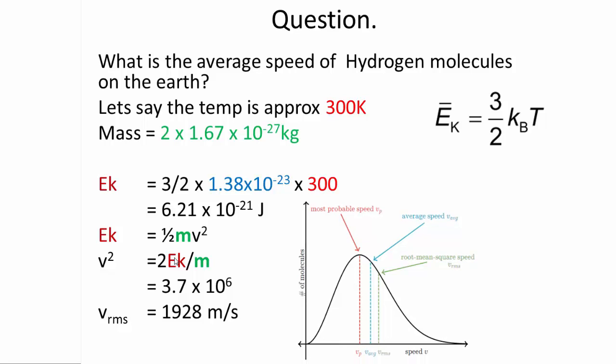And if we look at this, we can see that basically the root mean square is a little bit higher than the average speed. And it's even higher than the most probable speed, which is the modal value. Now notice that even though this is the average speed, there are many particles at any temperature that are still moving faster than that. This is just an average value.